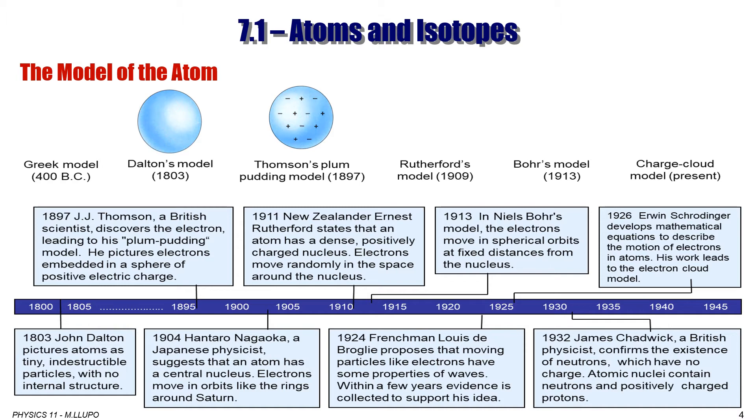A big step forward in this model came from Nagaoka, a Japanese physicist, who suggested that an atom has a central nucleus. Electrons move in orbit like rings around Saturn. And then Ernest Rutherford built up on this idea. In 1911, he stated that an atom has a dense, positively charged nucleus. Electrons move randomly in a space around the nucleus.